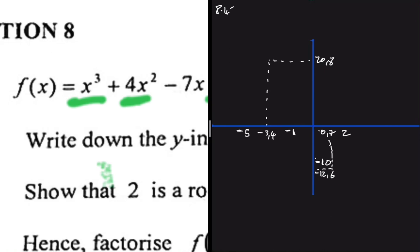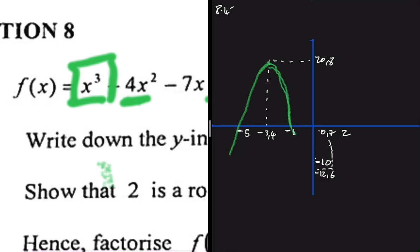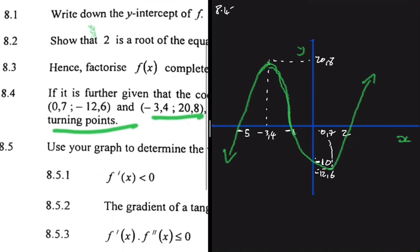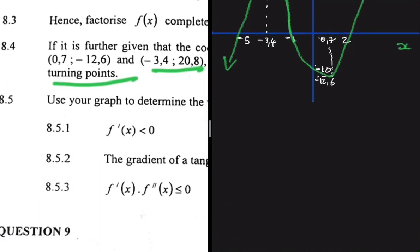Now we sketch the cubic function. Since we have x³, the graph starts concave down then changes concavity to concave up. The turning point at (-3.4, 20.8) is a local maximum, and the one at (0.7, -12.6) is a local minimum. The curve passes through -10 on the y-axis, turns at -12.6, and goes up through x=2. That is the completed sketch for 8.4.